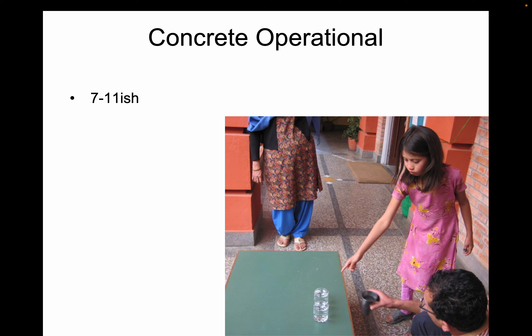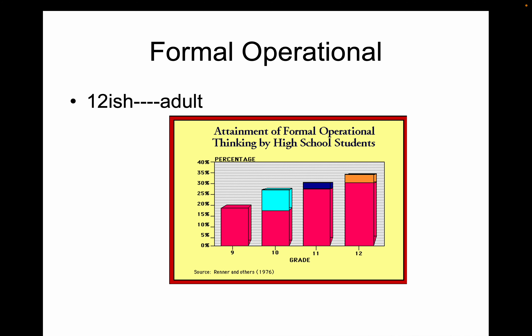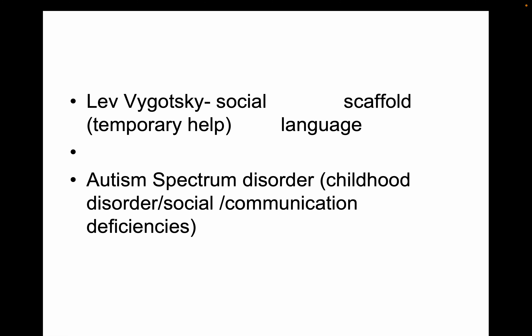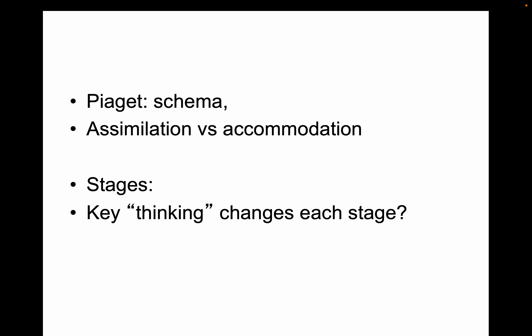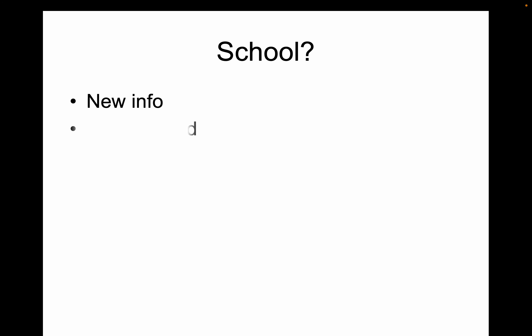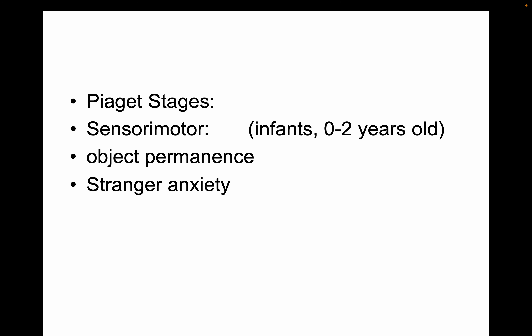Stage three is called concrete operational — think of elementary school, like third grade. Basic logic emerges, so everything from the pre-operational stage reverses: they can do conservation and all those other tasks. The final stage is formal operational — think high school. This is full-blown abstract logic: algebra, everything. Done by that stage.